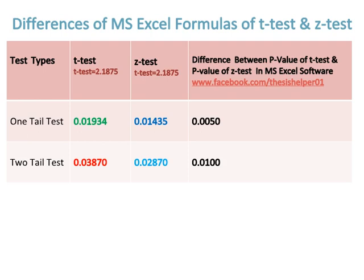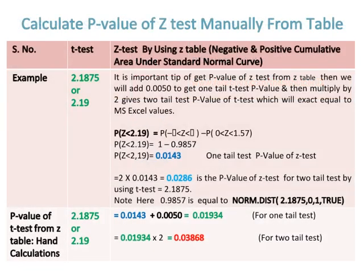Tip: the difference of 0.0050 in one tail test is because z-distribution can't use degree of freedom, which is n-1. Calculate p-value of z-test manually from table. T-test value is 2.1875 or 2.19.